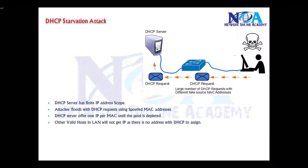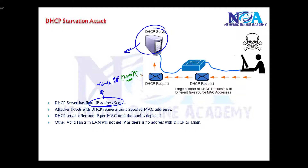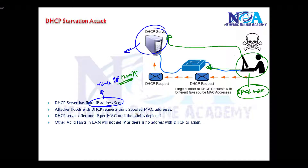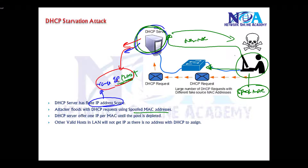DHCP starvation attacks are based on the DHCP server, which is generally configured with a range of IP addresses — roughly around 200 plus IP addresses. The attacker floods requests to the DHCP server by spoofing MAC addresses using tools, and every time a request comes in, a fake MAC address is used. Each time the DHCP server gets a request with a new MAC, it assigns an IP address until the entire configured range is exhausted.